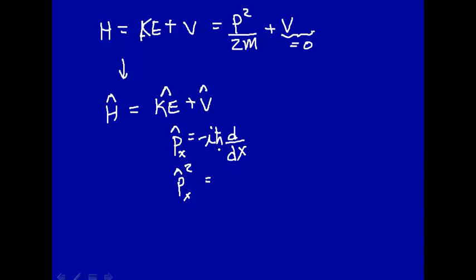So momentum squared will be, minus 1 times minus 1 will be positive 1, but we'll get the minus back again because i squared is minus 1. So this will be equal to minus h bar squared times the second derivative with respect to x. So that's what it means to square the operator. You take the second derivative.